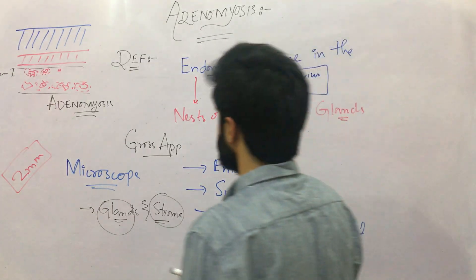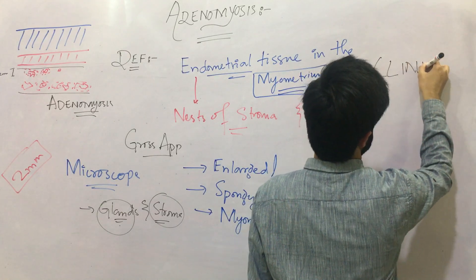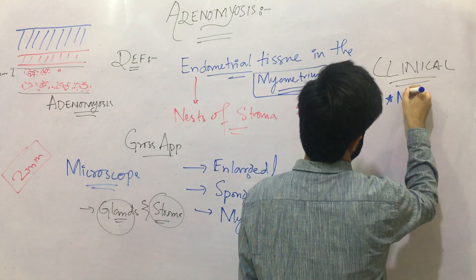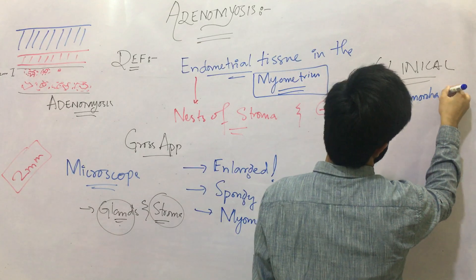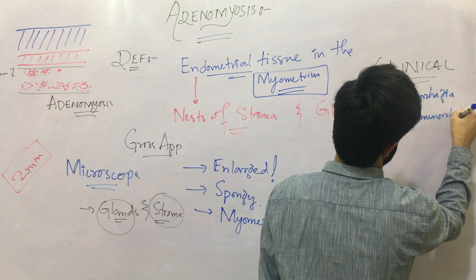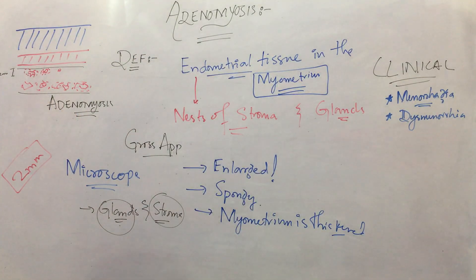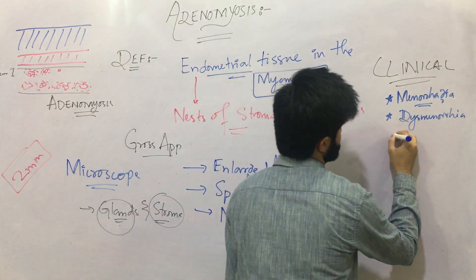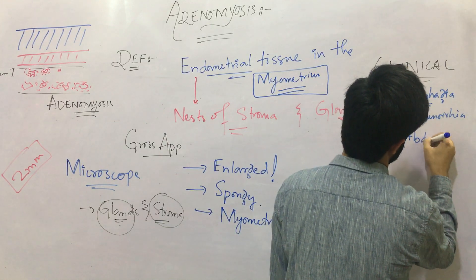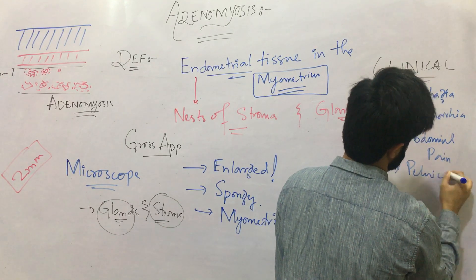How will Adenomyosis present clinically? Clinically it will present as menorrhagia — which means excessive menses — and dysmenorrhea, which means pain during menstruation. Additionally, there will be abdominal pain and pelvic pain.